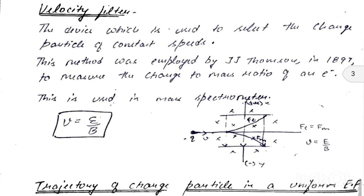In the velocity filter, a charge particle is passed through a region where both magnetic field and electric field are present. The magnetic field is perpendicular into the paper and the electric field is directed downward. If the particle's velocity equals E/B, it travels straight. If velocity is less than E/B, it deflects upward; if greater than E/B, it deflects downward.